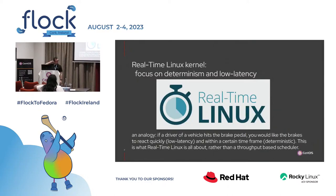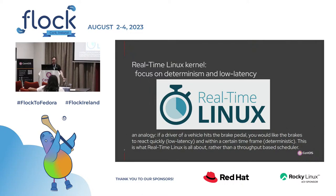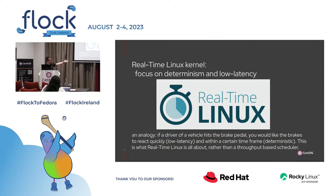This is one of the few packages we actually replaced — we have our own automotive kernel. It's 99.99% of the kernel that goes into CentOS Stream. The key difference is we use the real-time Linux patch set — basically the scheduler for this type of kernel that focuses on determinism and low latency. To use an analogy: if you're a driver of a vehicle and you hit the brake pedal, you would probably like the brakes to react quickly, and within a certain timeframe. This is kind of what real-time Linux is all about, and in these safety-critical domains it's often used.